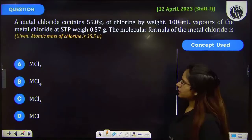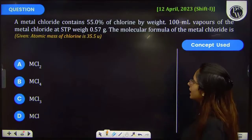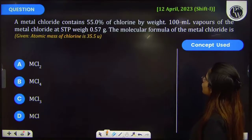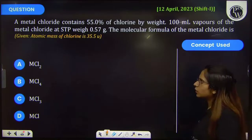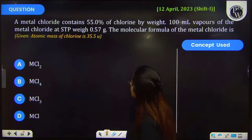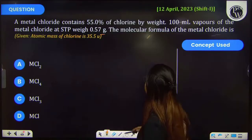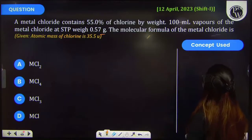Let's see this previous year question. The question says that a metal chloride contains 55% of chlorine by weight. 100 ml vapors of the metal chloride at STP weigh 0.57 gram. The molecular formula of the metal chloride is...